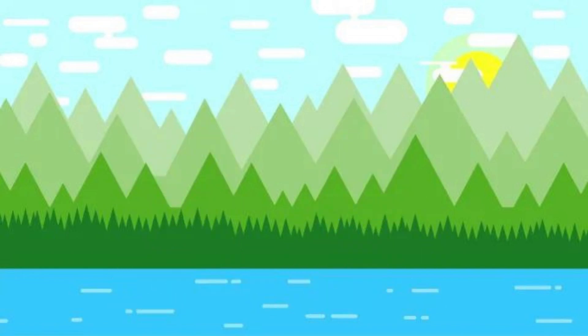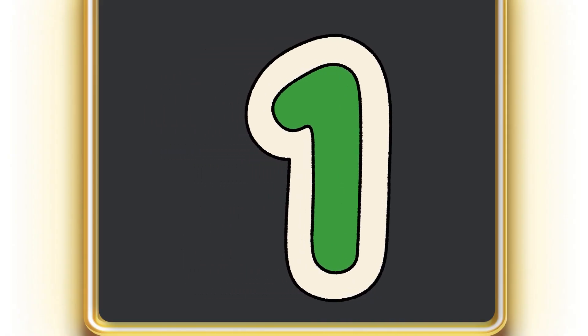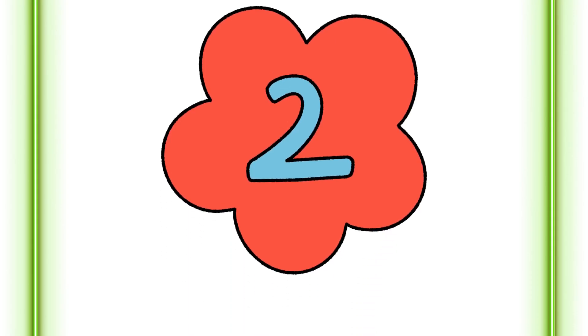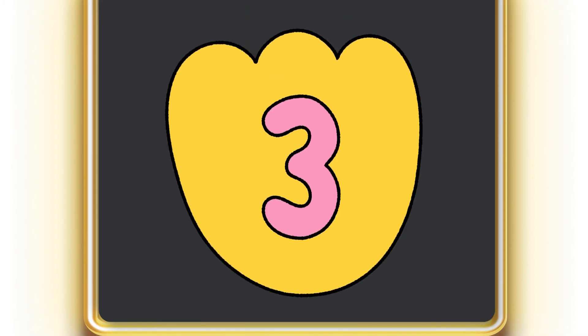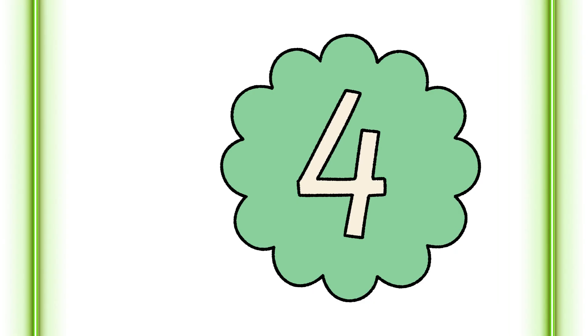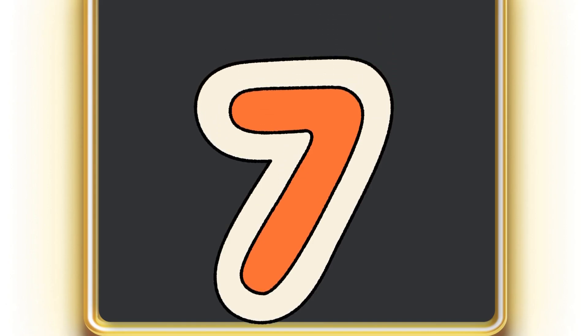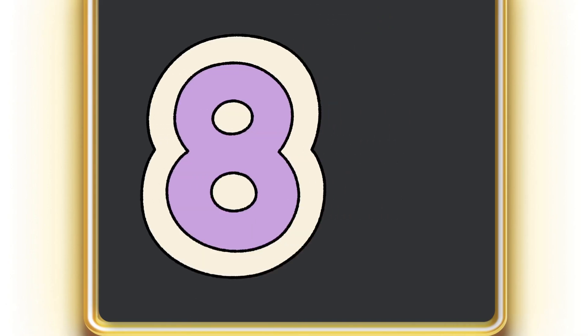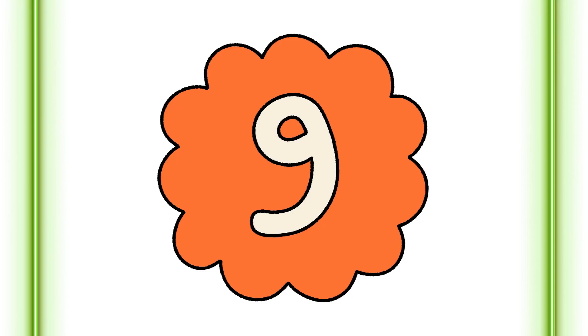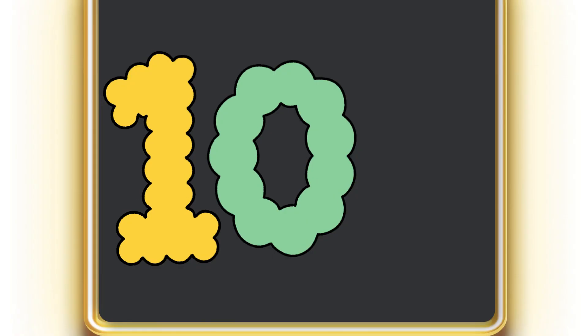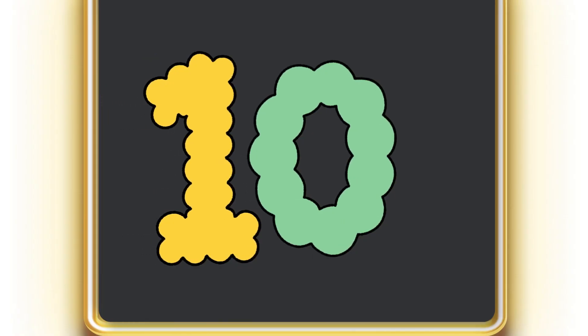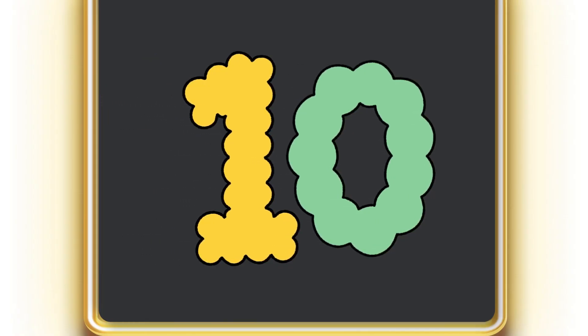Seven little, eight little, nine little numbers. One little, two little, three little numbers. Four little, five little, six little numbers. Seven little, eight little, nine little numbers. Ten little numbers.